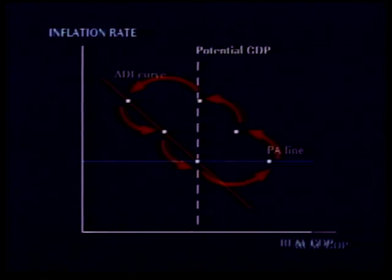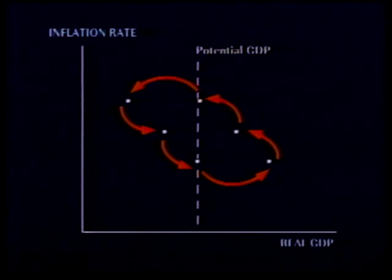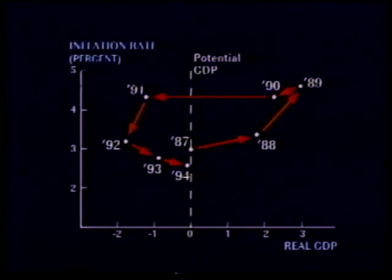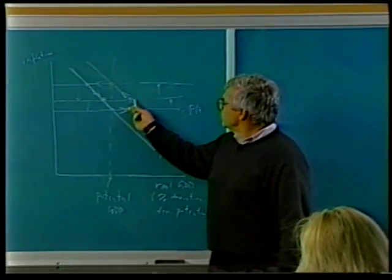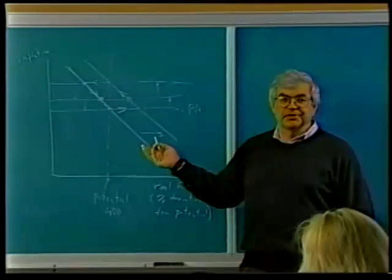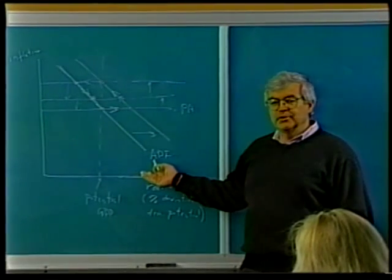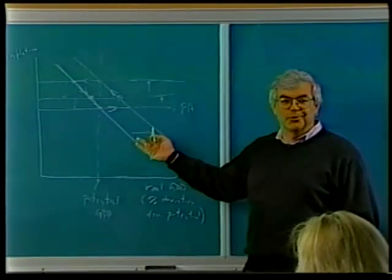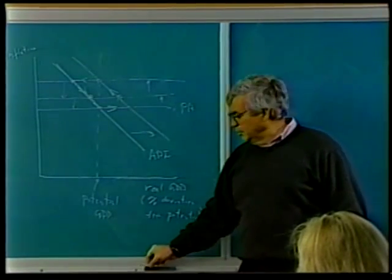This circular pattern represents a complete boom and bust cycle in the economy. Does it look familiar? Compare it with the data you saw earlier, representing the real fluctuations in the economy between 1987 and 1994. The points trace out a circle, much like the original circle we started with in the data, and therefore give evidence that the model actually works in describing what happened.